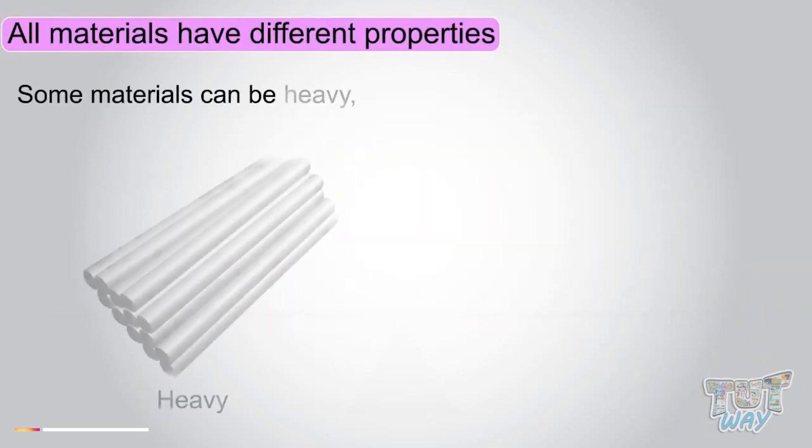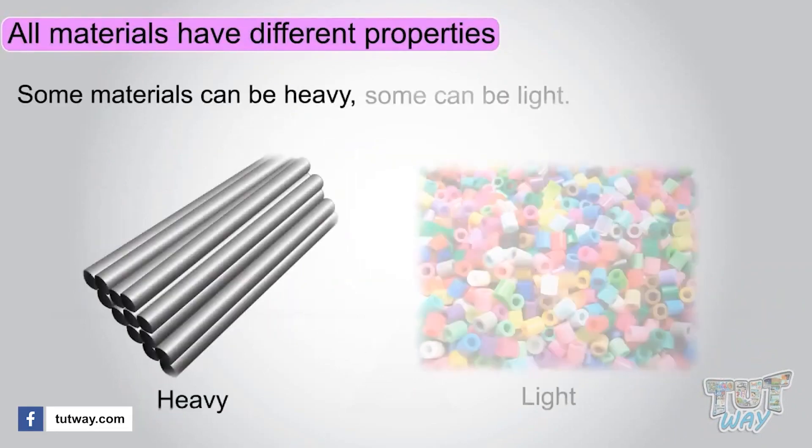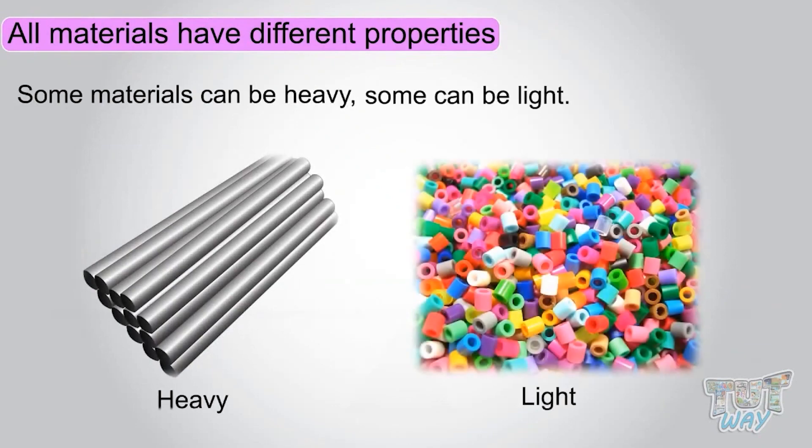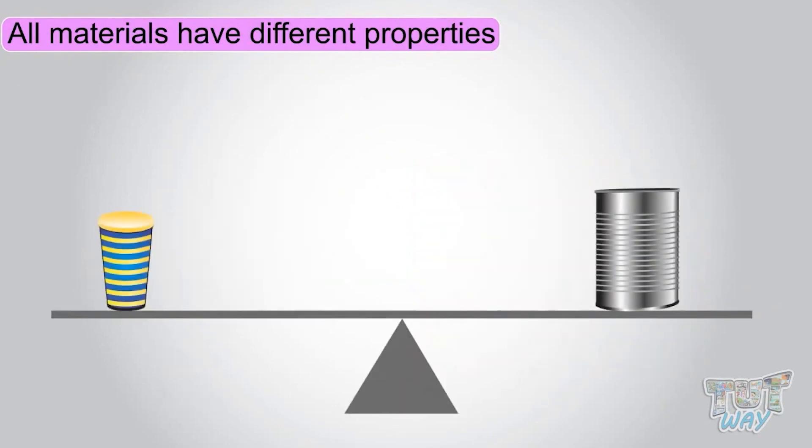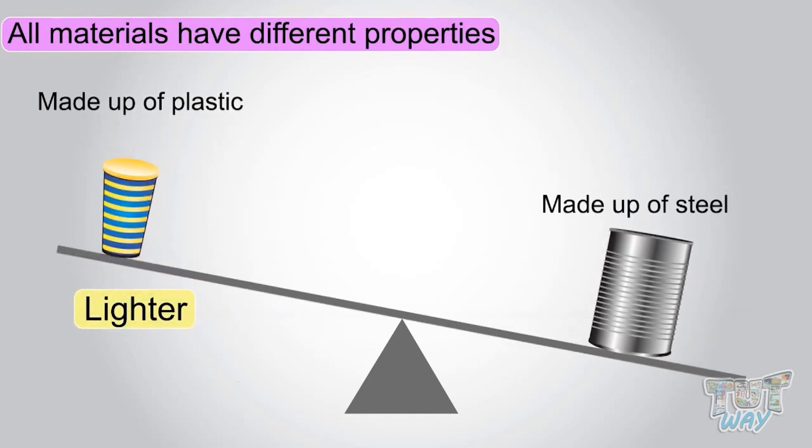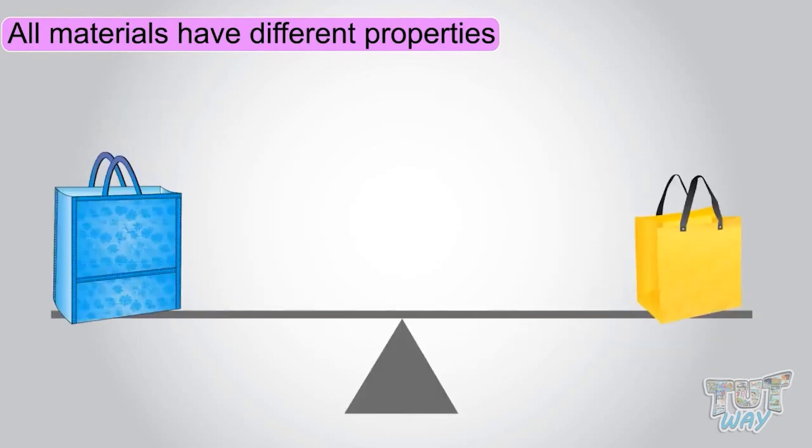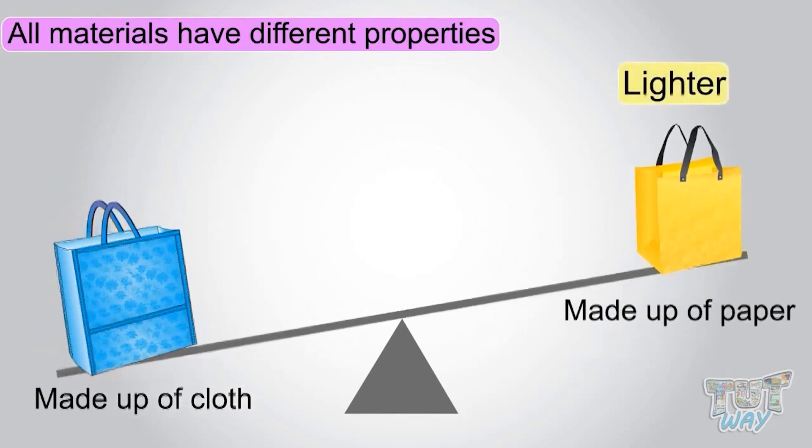Some materials can be heavy, some can be light. If you have two tumblers, one made of plastic and one made of steel, the one made of plastic would be lighter. If you have two carry bags, one made of cloth and one made of paper, the one made of paper would be lighter than the one made of cloth.